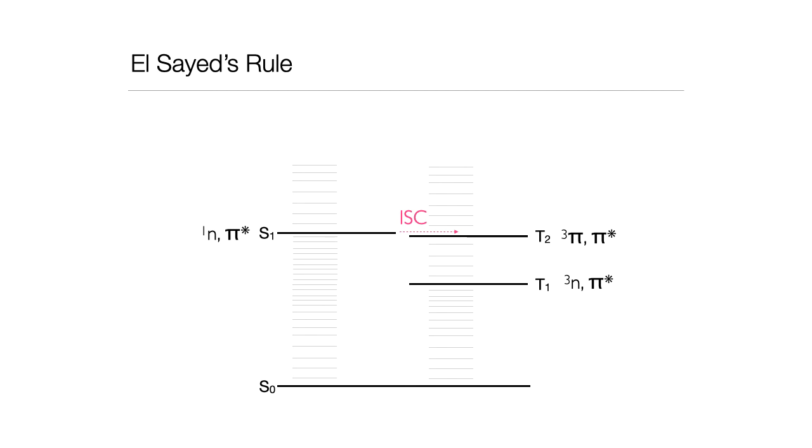These two factors together, El-Sayed's rule and the energy gap law, can give us a really good understanding and help us explain the rates of different processes. As I say, I would never expect you to be able to calculate any of these rates. I hope that this little video has been useful. If you have any questions, please do not hesitate to ask.